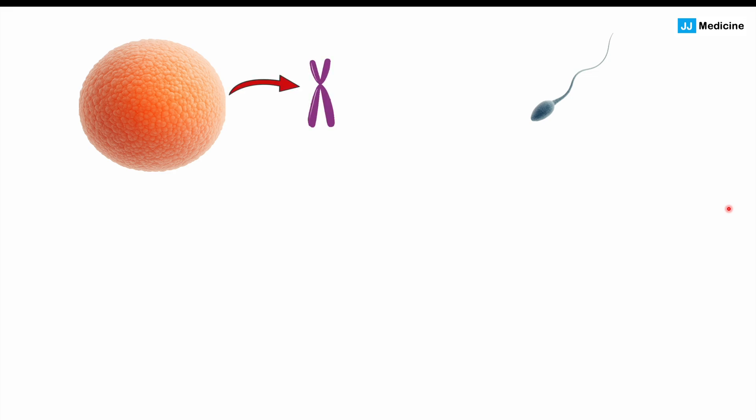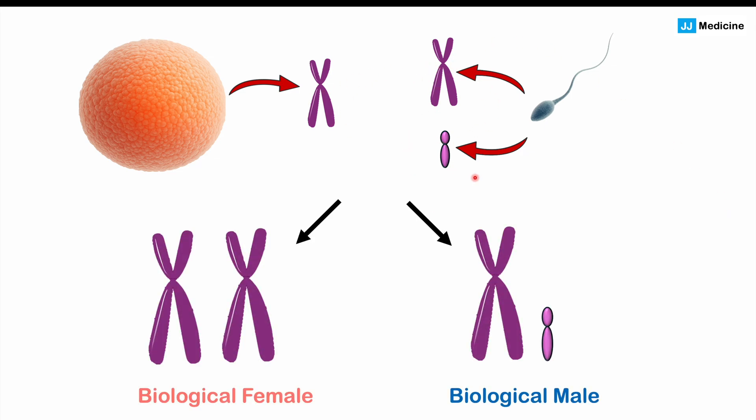So at conception, an egg is always going to have an X chromosome. It can either be an X chromosome from their mother or from their father. And the sperm is either going to have an X chromosome or a smaller Y chromosome. And the combination of either the X or the Y from a sperm with the X from the egg is either going to create a biological female, XX, or a biological male, XY.